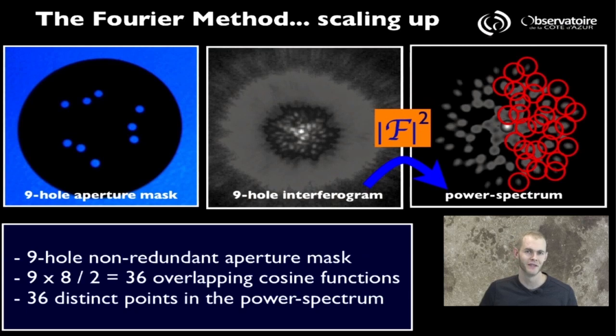But again the nice thing is that when you work in the Fourier space, the Fourier transform counterpart of that image, and again plot the power spectrum of that image, you realize that all of that information spread over a wide area of the detector again concentrates into a series of distinct and well-identified islets in the power spectrum space.